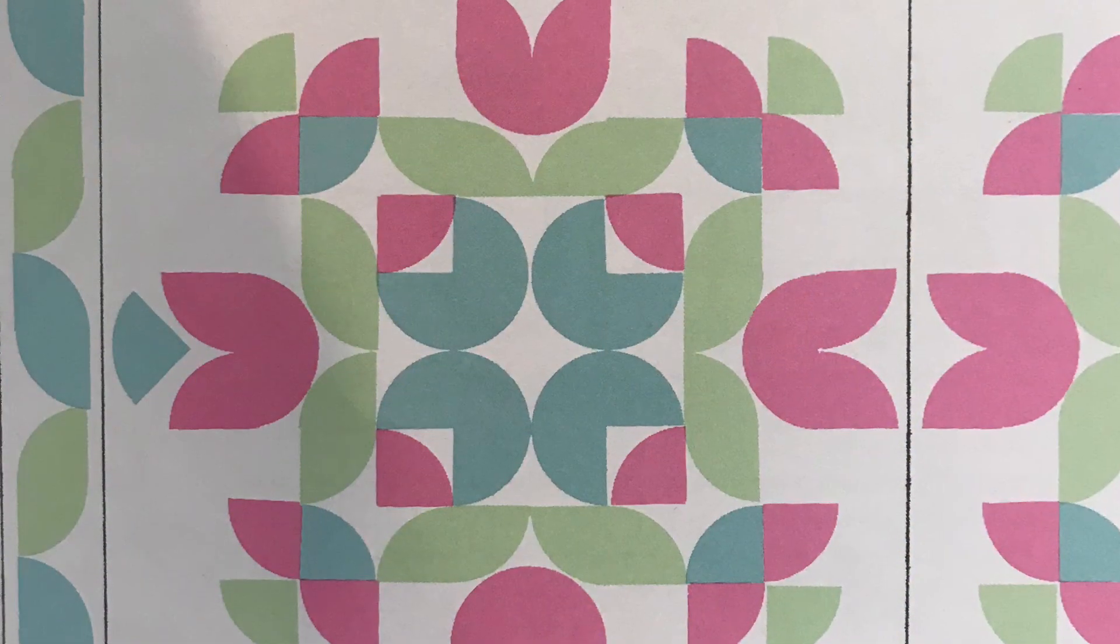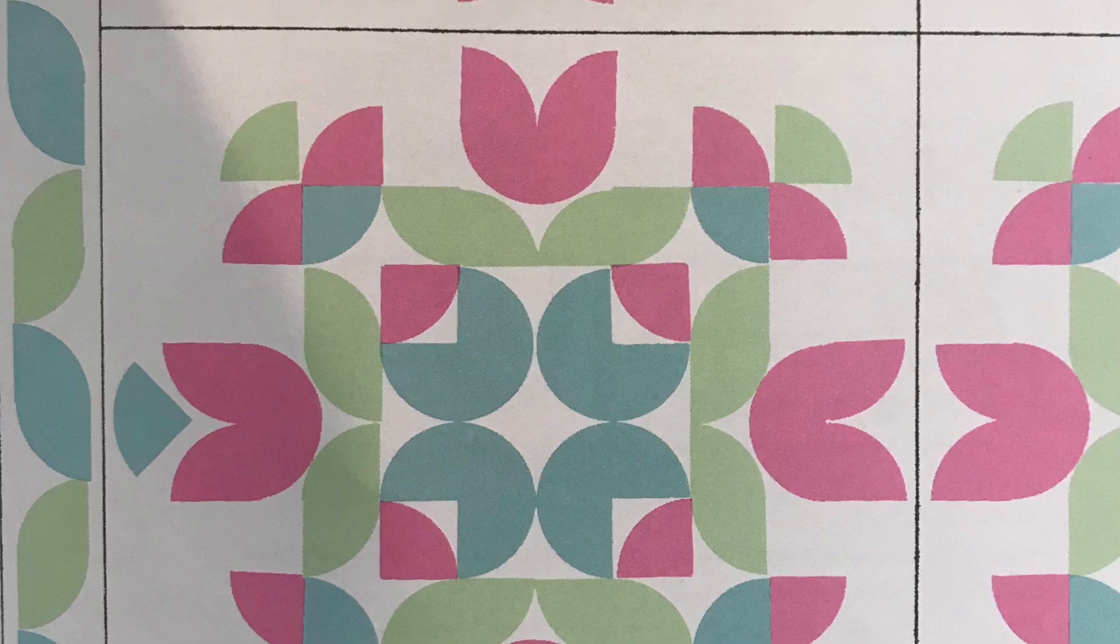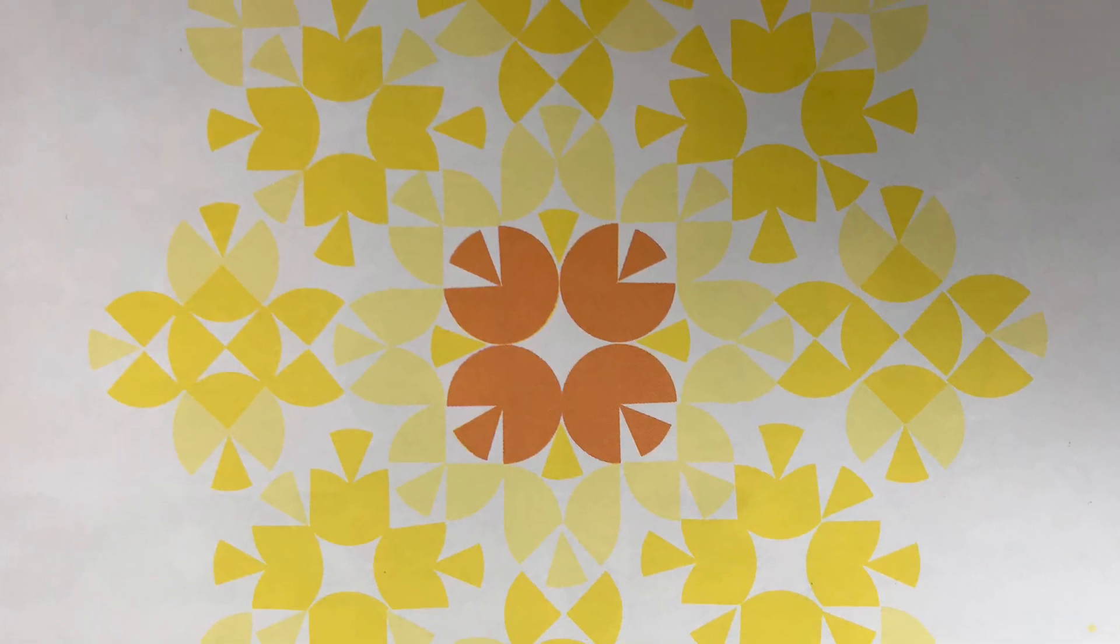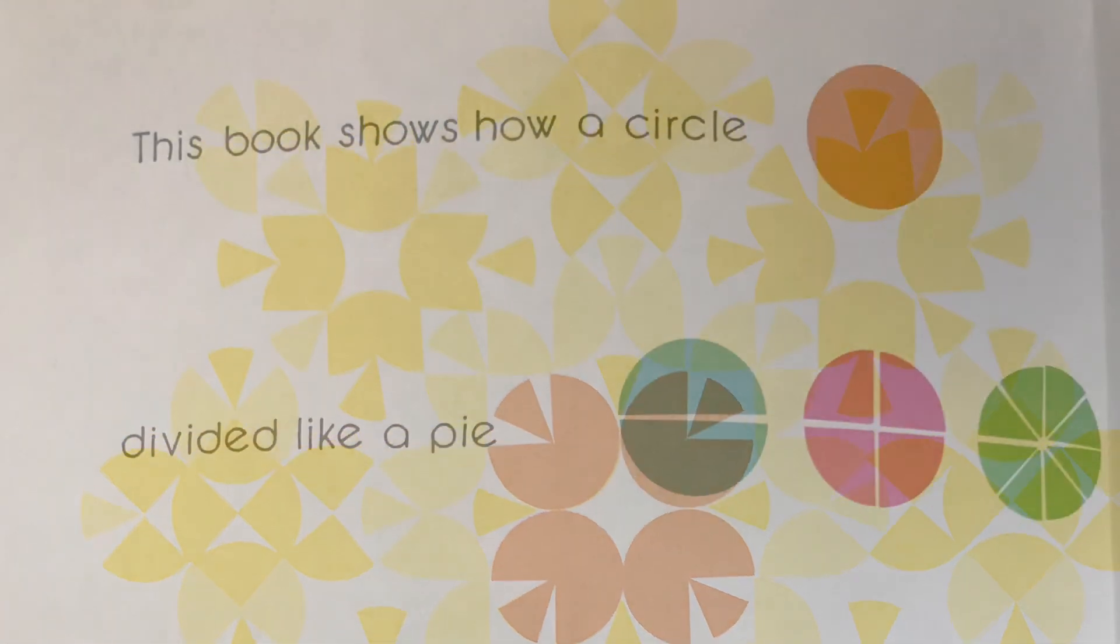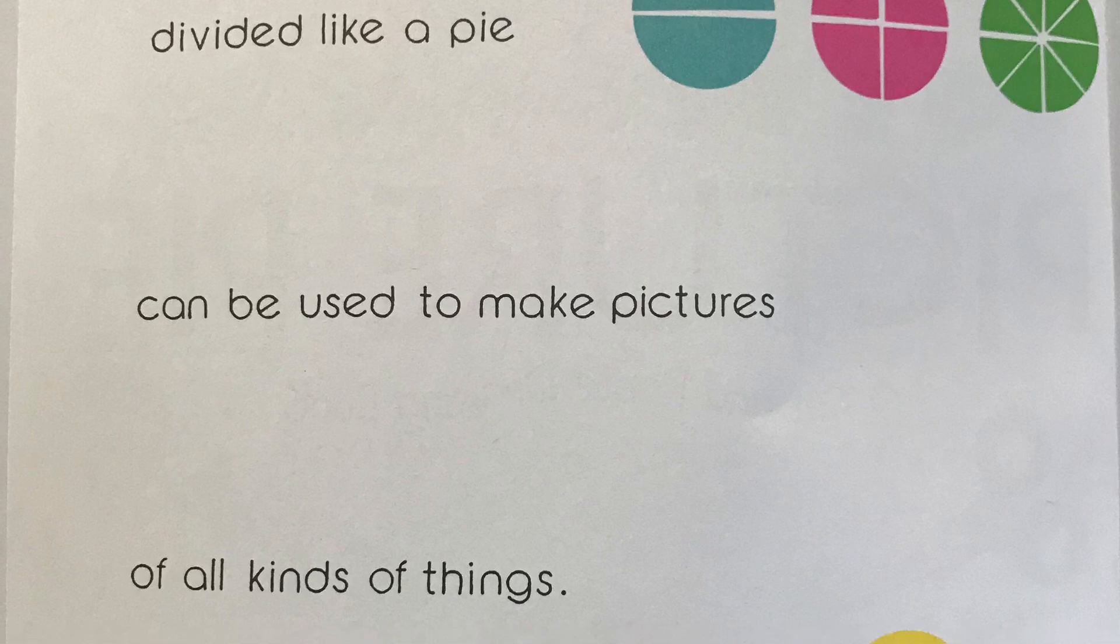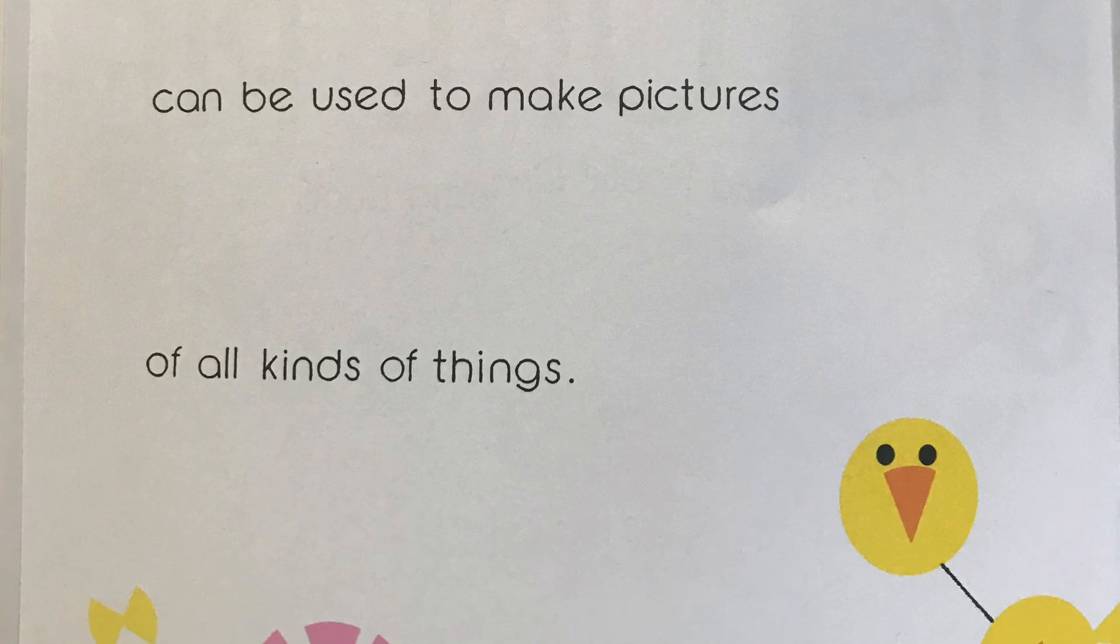He has a book called Picture Pie and in it he shows many examples of how you can create beautiful geometric art as well. This book shows how a circle divided like a pie can be used to make pictures of all kinds of things.